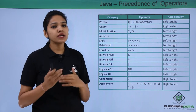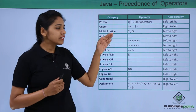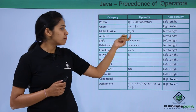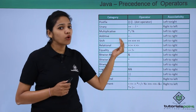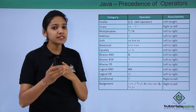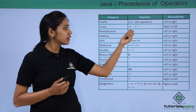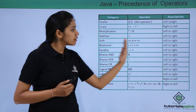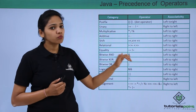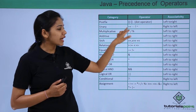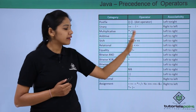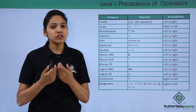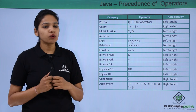Let us see the precedence of operators in a table. The table shows that multiplication is above addition. For operators of equal precedence, such as multiplication and division, evaluation goes from left to right. For certain other operators, evaluation is from right to left. Using this table, you can decide what kind of expression you want to write.